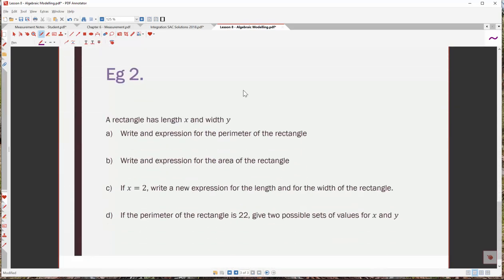All right, example two. A rectangle has length x and width y. Now, I would highly recommend you draw up these particular shapes. So any question that involves shapes or things like that, make sure you draw the picture. So there's a length x and a width y. They can be around the other way if you want. Write an expression for the perimeter of the rectangle. So if this side length is x, then this side length is also going to be x. And if this side is y, then this side is going to be y, because that is the same as that, and that is the same as that. So the expression for perimeter is going to be y plus y plus x plus x is the perimeter or 2y plus 2x.